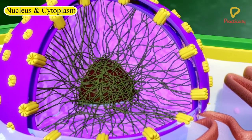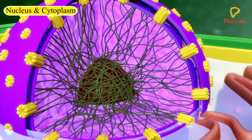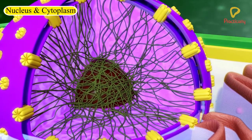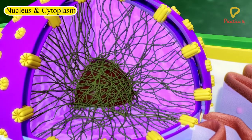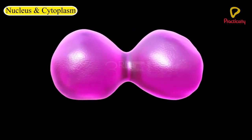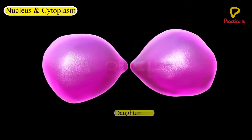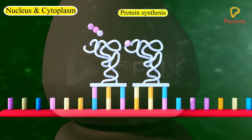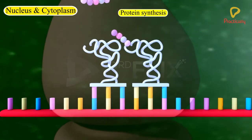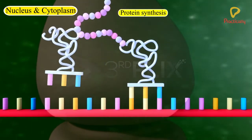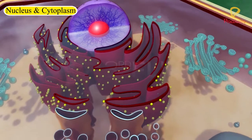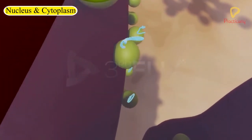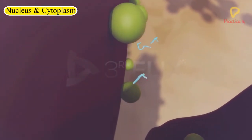The nucleus plays a central role in cellular reproduction, which is the process by which a single cell divides and forms two new cells. It also plays a crucial part, along with the environment, in determining the way the cell will develop and what form it will exhibit at maturity by directing the chemical activities of the cell.